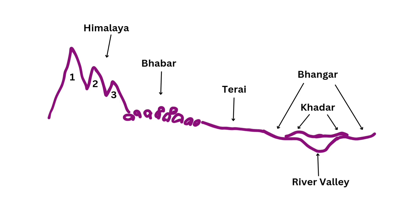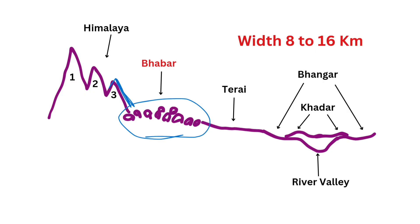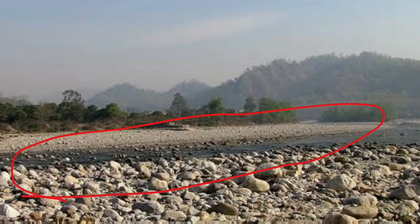What is Bhabar? After descending from the mountains, the rivers deposit pebbles in a narrow belt known as Bhabar. The width of this belt is about 8 to 16 kilometers and it lies parallel to the Shivaliks. All the streams disappear in this region.